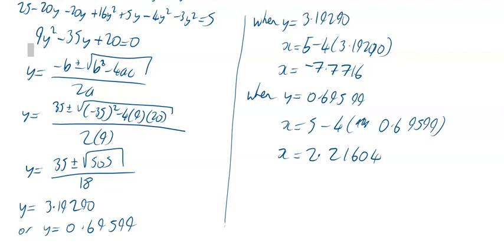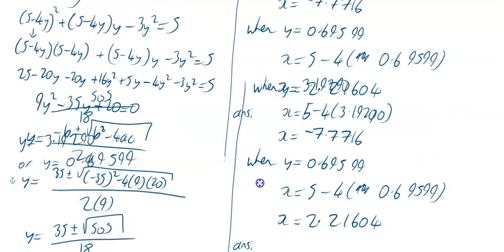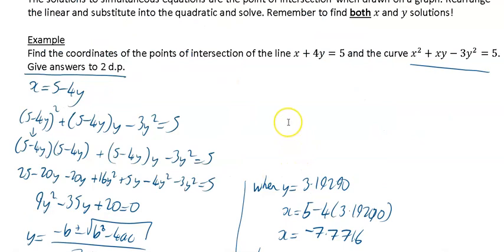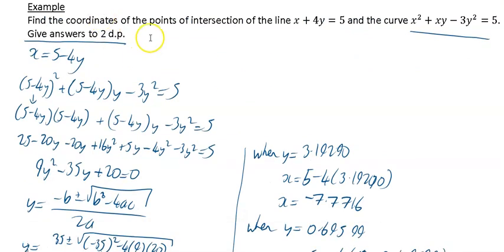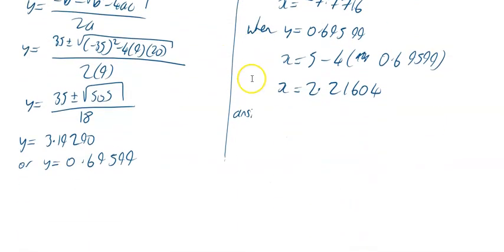Now notice the question asked me to go to two decimal places. In my working out I've gone to 5 so it's definitely going to be accurate enough. So my answer, the first coordinate, let's have a look and see, we'll just check out, yep, find the coordinates of the points of intersection to 2 decimal places.